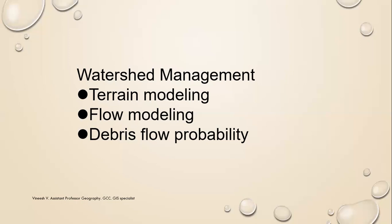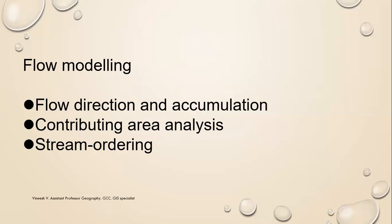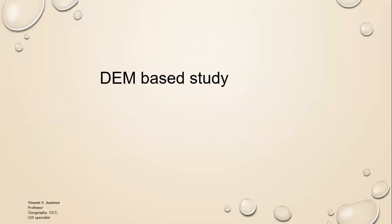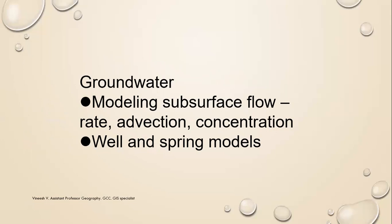You can search and use these kinds of resources. For watershed management, you can read about creation of DEM, terrain modeling, and automated watershed extraction from topography — flow direction, accumulation, delineation. This is all connected with slope aspects. Flow modeling involves flow direction and accumulation, contributing area analysis, and stream ordering — you can refer to the Strahler method. Debris flow probability involves saturation and viscosity calculation, all done by hardware and software combination.